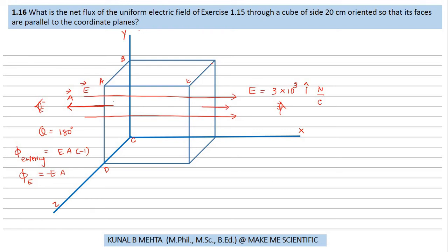Whereas the other four sides of the cube are not going to participate in the contribution to the flux, because flux is E dot A, which is EA cos θ. In other four cases, like in say ABEF, the area vector would be like this.